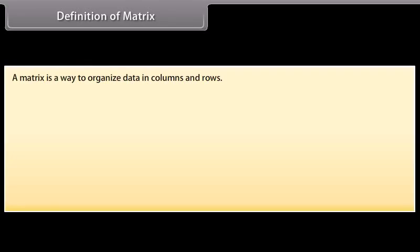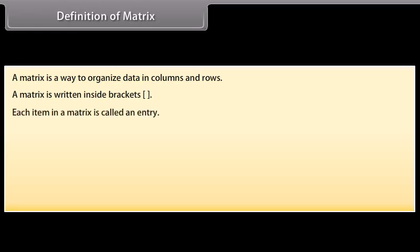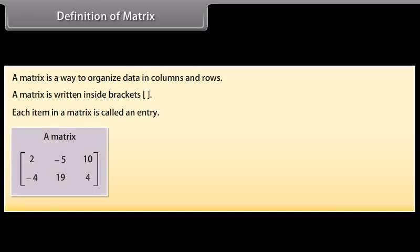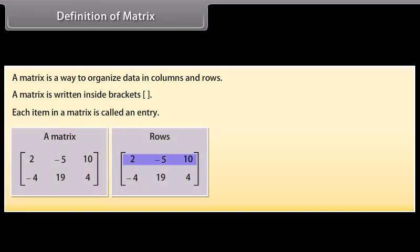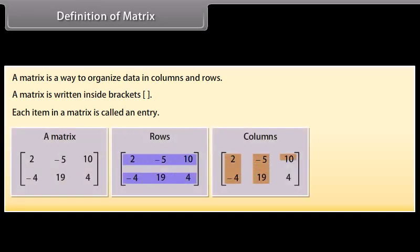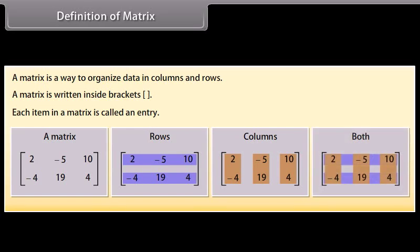Definition of matrix. A matrix is a way to organize data in columns and rows. A matrix is written inside brackets. Each item in a matrix is called an entry. Look at this matrix. It has two rows and three columns. The entries of the matrix are 2, minus 5, 10, minus 4, 19, 4.